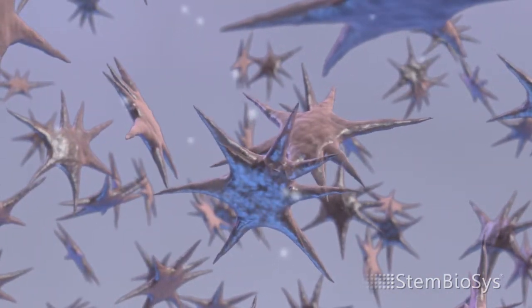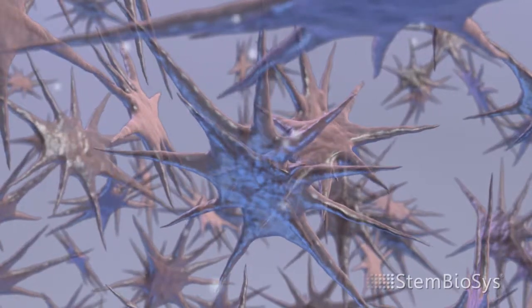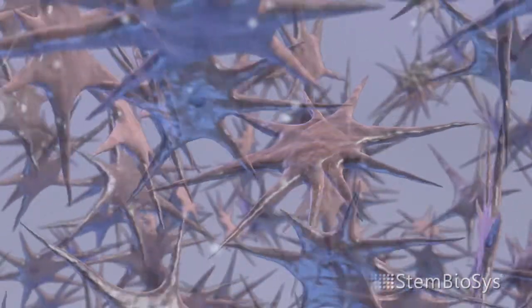The cells begin to divide, thereby increasing cell numbers and fully covering the surface of the cell culture dish or substrate.